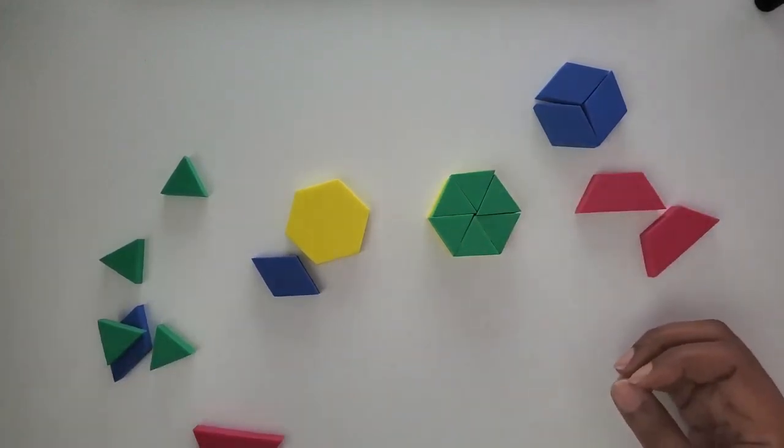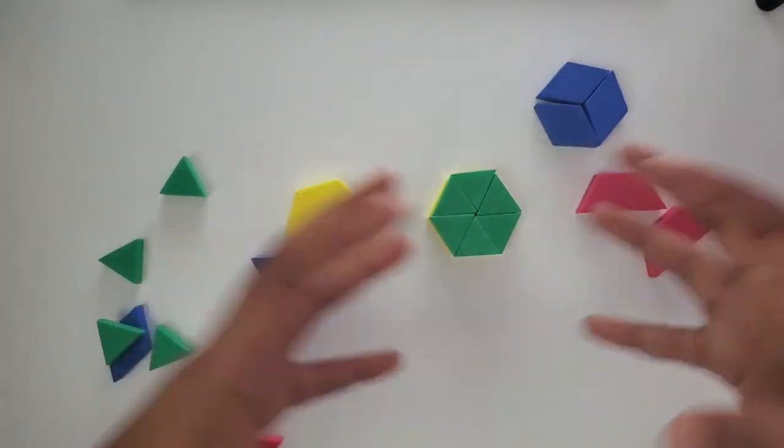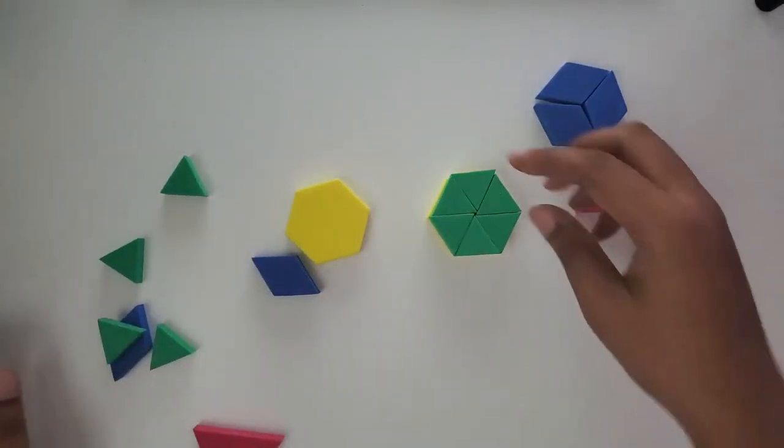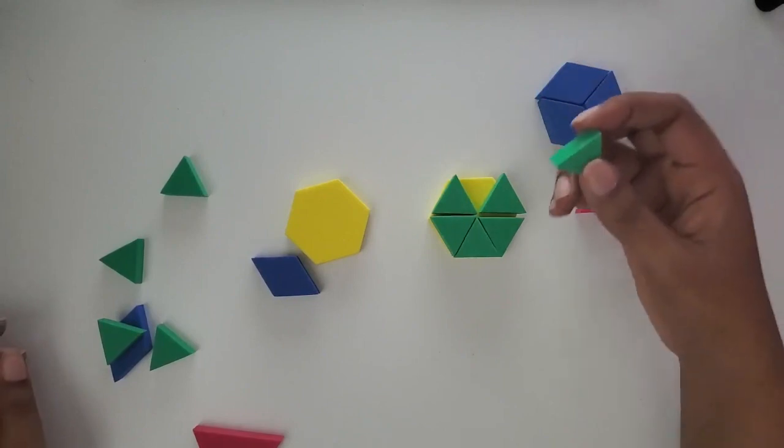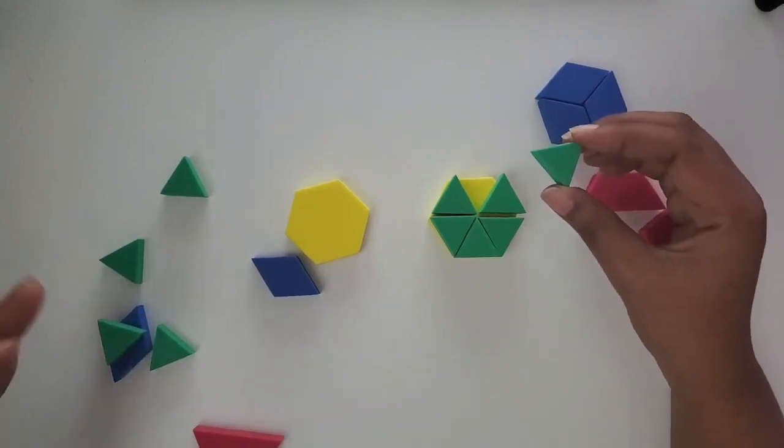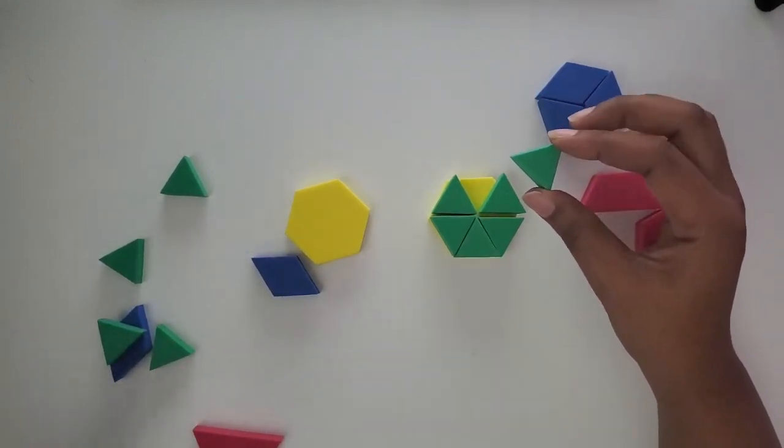So we know six of these pieces together make one whole. But if I looked at one of them, what is the size of this piece? It is a sixth. We call it a sixth because we need six of them together to make one whole.